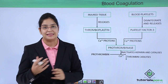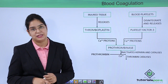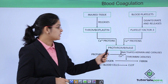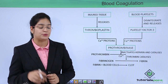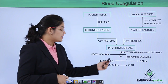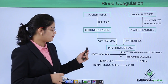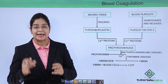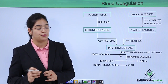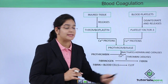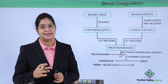Third, thrombin works as an enzyme — it depolymerizes fibrinogen into soluble monomers, then repolymerizes those monomers into an insoluble polymer known as fibrin. This insoluble fibrin combines with blood cells — RBC and WBC — to form a clot.